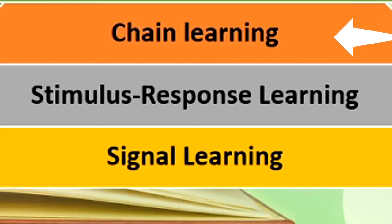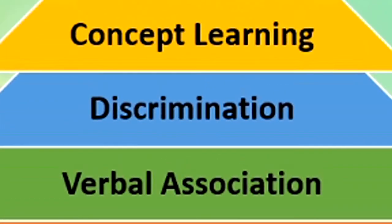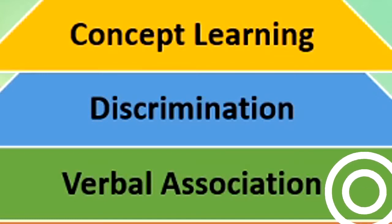In chain learning, you associate different steps in a sequence — what to do first, what to do next. Then chain learning grows to verbal association learning, where a learner associates cues or words — whether written or spoken — to a particular function, activity, or concept. That is called verbal association.